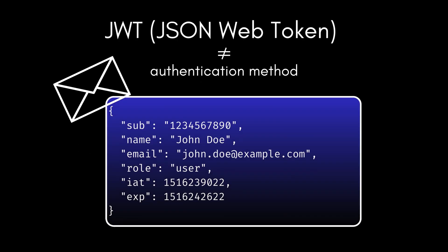Here's where many people get confused: JWT. JSON Web Token is not an authentication method — it's a token format. Think of JWT as the envelope that carries claims about the user. A JWT usually contains three parts: Header, which contains the metadata; Payload, with claims like user ID, email, expiration, roles, etc.; and Signature, used to verify it hasn't been tampered with. The key benefit is that they are self-contained and verifiable. The server doesn't need to store session data — it just verifies the token signature.